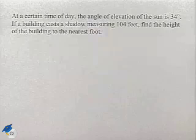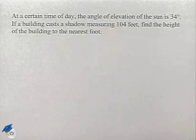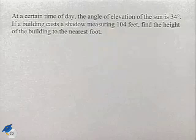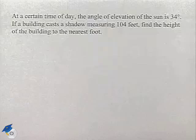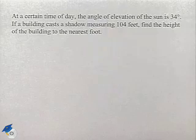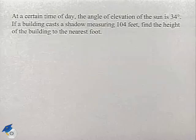In our next problem, we're going to look at an angle of elevation. At a certain time of day, the angle of elevation of the sun is 34 degrees. If a building casts a shadow measuring 104 feet, find the height of the building to the nearest foot.